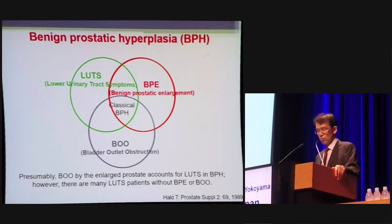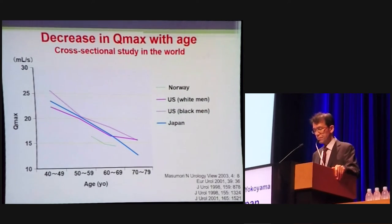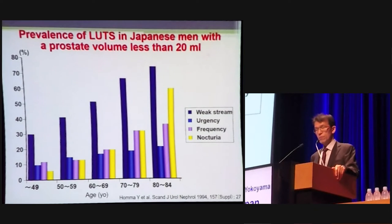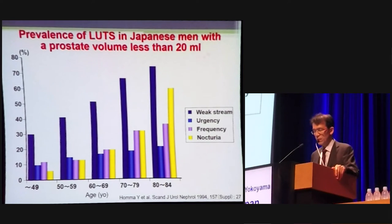In fact, bladder outlet obstruction by the enlarged prostate accounts for LUTS in BPH. However, there are many LUTS patients without BPE and BOO. A significant reduction in Qmax with advancing age was noted in Japan, Norway, and the US. However, the increasing rate of prostate volume with age in Japan is markedly lower than in the US and Europe. Even if prostate volume is less than 20 mL, the prevalence of LUTS in men increases with age. This may be partially dependent on the increase in lifestyle-related disease in Japan.